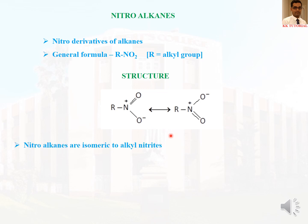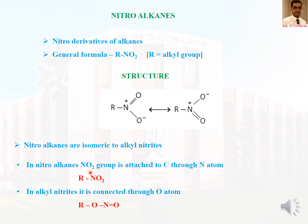Another important point: nitroalkanes are isomeric to alkyl nitrites. When a general formula R-NO2 is given, we should not be confused between alkyl nitrites and nitroalkanes. In nitroalkanes, the NO2 group is attached to carbon through the nitrogen atom — the connection is between the carbon of the R group and nitrogen. In alkyl nitrites, the connection is between carbon and oxygen. Even though they have the same molecular formula, structurally they are different, which is why they are isomeric.